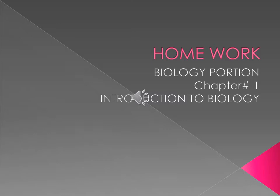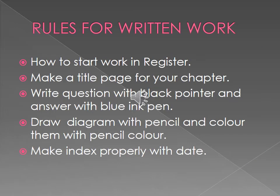First of all students, in your register, you may divide in three portions equally. First portion is biology, second portion is chemistry, and third portion is physics. How to write in your register: make a title page of your chapter, write questions with black pointer and answers with blue ink pen. Draw diagrams with pencil and color them with pencil color. Make an index properly with the date.